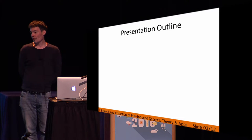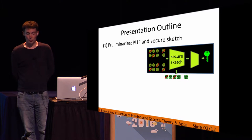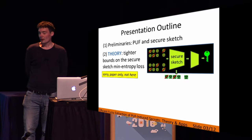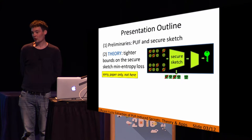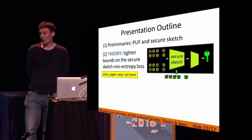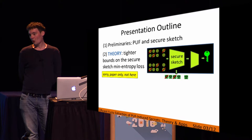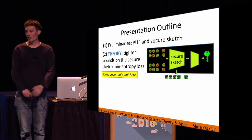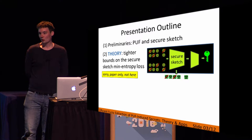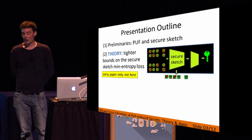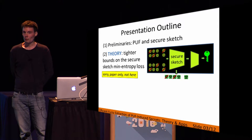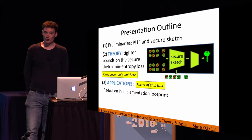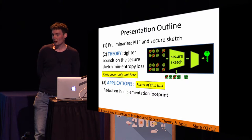Now the presentation outline. First, some preliminaries about the PUF and then about the secure sketch — which is the main focus of this presentation. In the paper, there is an extensive theory part, more than half of the paper, where we derive tight bounds on the secure sketch min-entropy loss. We only do a brief introduction of the theory here, because the theory is formula-based and would require more time to explain properly.